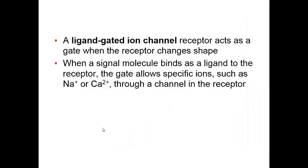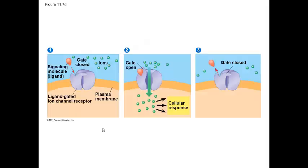The last type of receptor is the ligand-gated ion channel, seen in the nervous system. Examples include sodium channels and calcium channels. These channels are normally closed and have a gate; the key to open the gate is the ligand, which in the nervous system is the neurotransmitter. When the neurotransmitter binds to the ligand-gated ion channel, it causes the channel to open, allowing ions such as sodium, potassium, or calcium to enter or leave the cell.